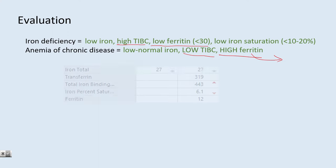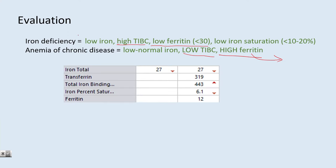Let's take a look at some examples. This first patient has low iron, high TIBC, an iron percent saturation less than 10%, and ferritin less than 30. This is going to be iron deficiency anemia.